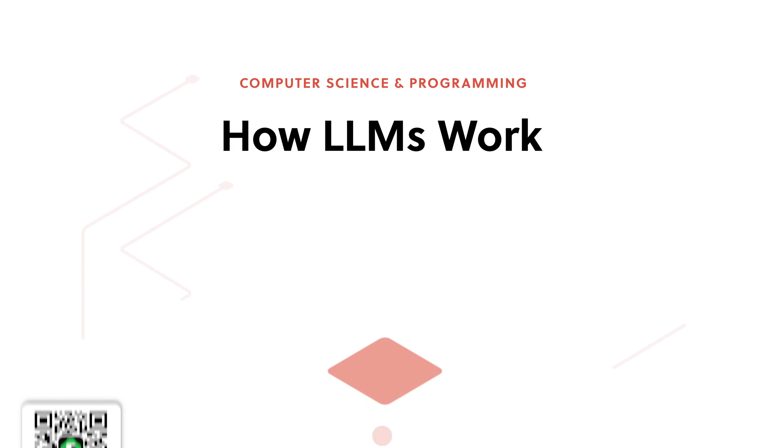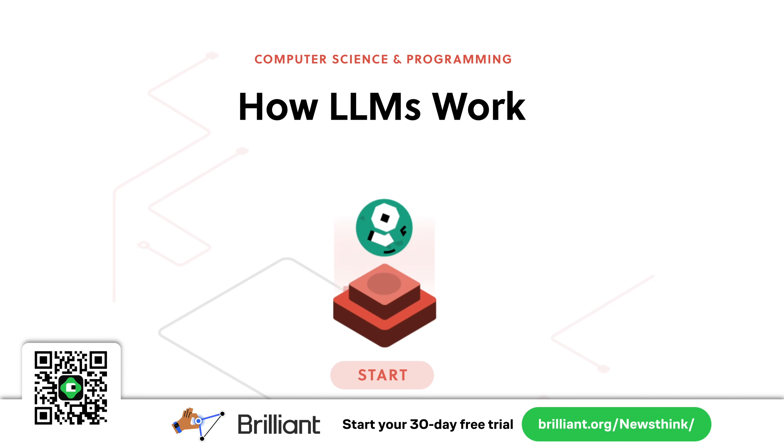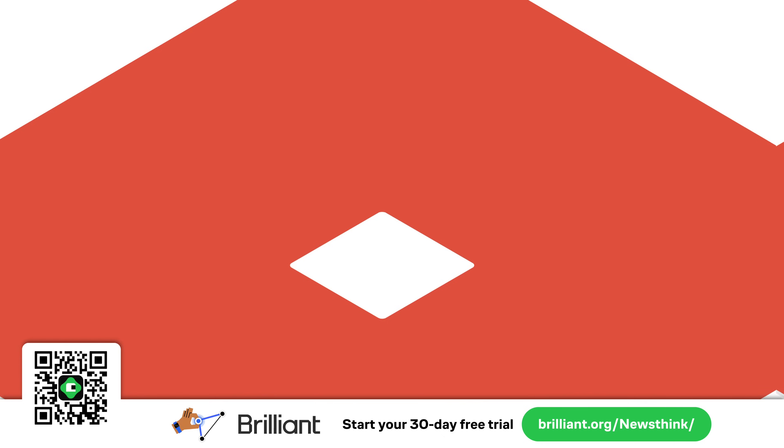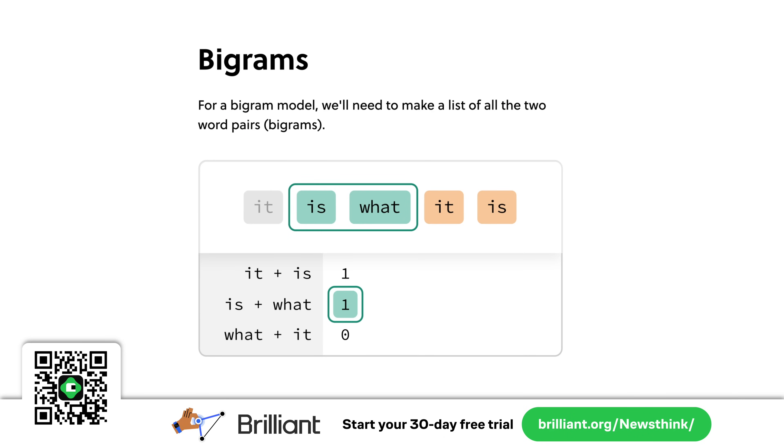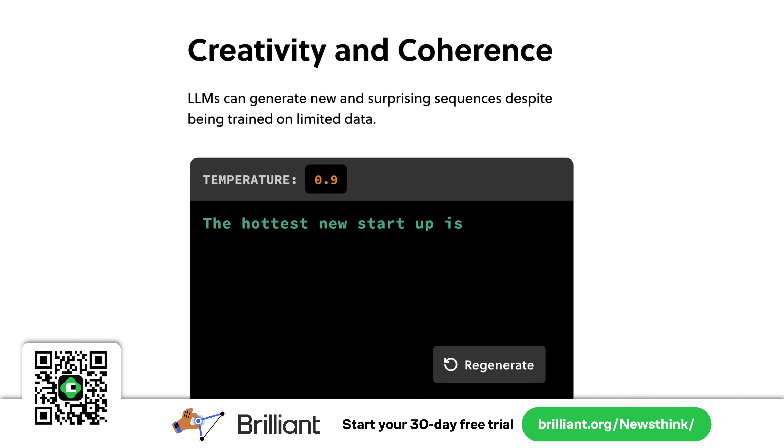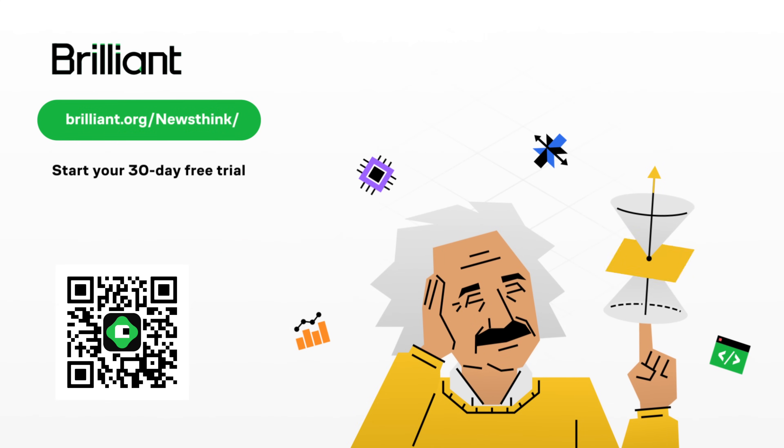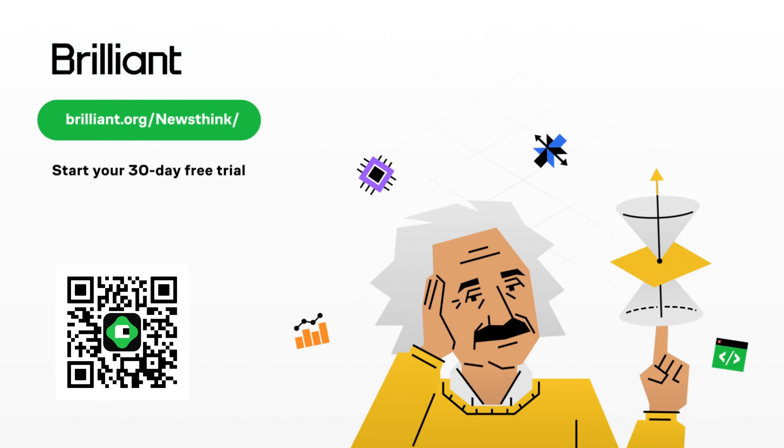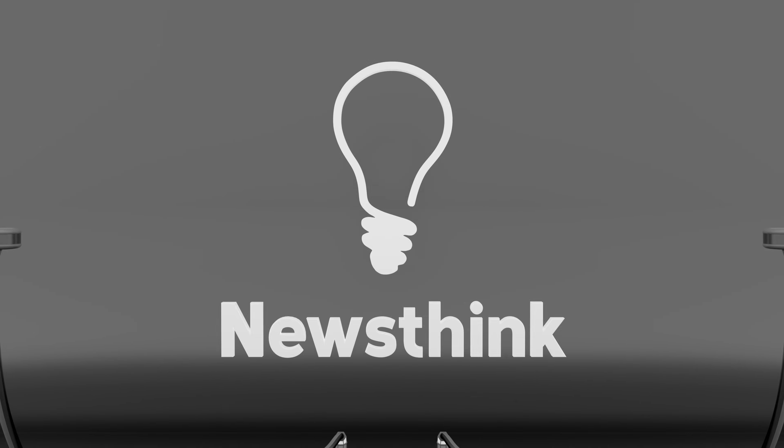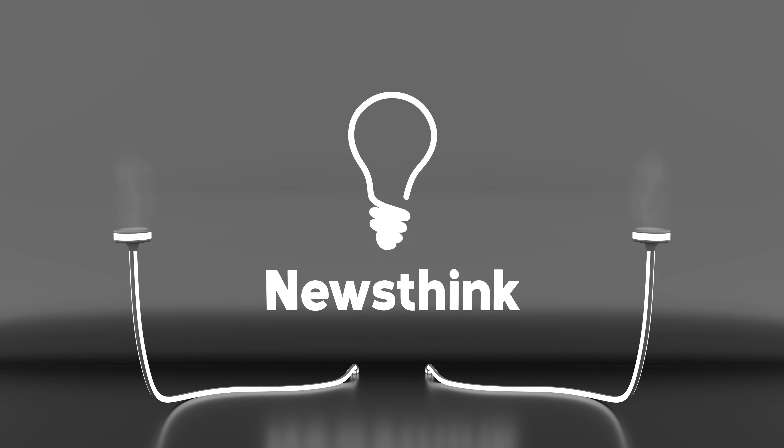You can try out Brilliant for free for 30 days by signing up at brilliant.org/Newsthink. That's brilliant.org/Newsthink for a free trial, link in the description, or scan my QR code on your screen. You'll also receive 20% off Brilliant's annual premium subscription, giving you access to thousands of lessons. Thanks for watching. For Newsthink, I'm Cindy Pom.